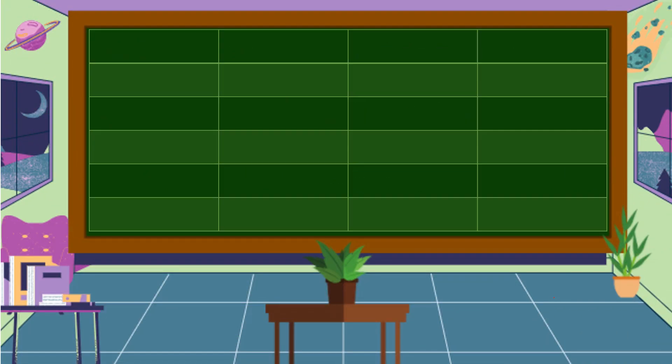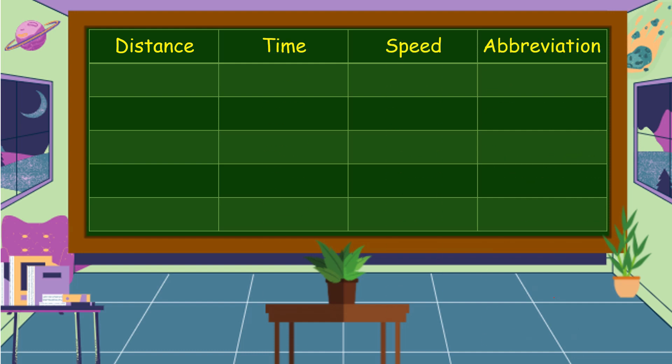Here are the commonly used units for distance, time, and speed, and their abbreviations.